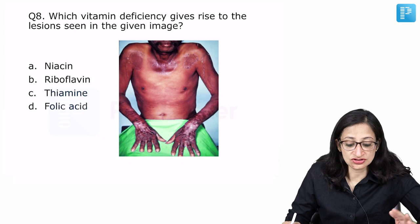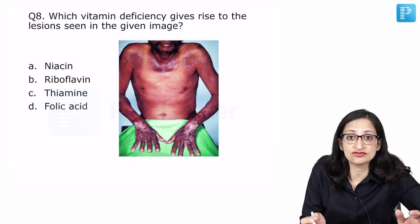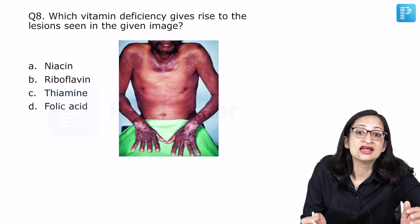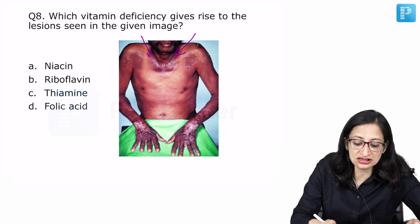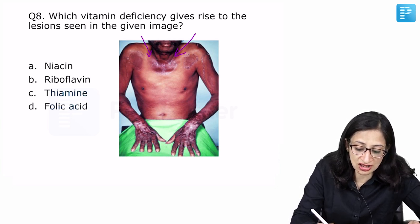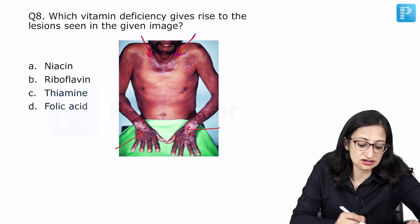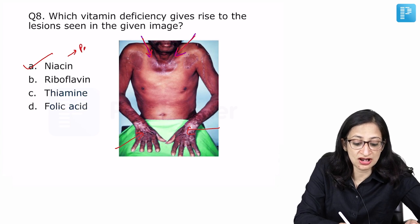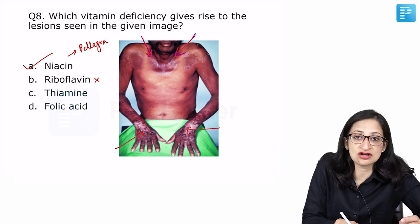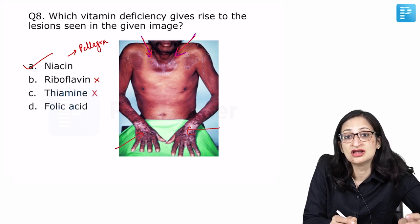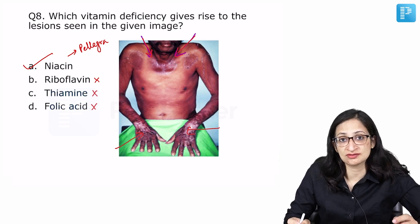Which vitamin deficiency gives rise to the lesions shown in the given image? Though the image shows an adult person, we have dealt with the micronutrients and nutrition is very important from pediatrics perspective. So, we are discussing the questions of nutrition and inborn errors of metabolism which might have some overlap with medicine as well or biochemistry. You can see the Casal's necklace kind of rash here. The rash is there in the sun exposed areas. It is there on the hands, it is there on the neck. That rash is basically due to niacin deficiency which gives rise to pellagra. Pellagra is a disease of some D's where there is diarrhea, dermatitis, dementia and even death can happen. Riboflavin deficiency will cause angular stomatitis, cheilitis and so on. Thiamine deficiency will give rise to beriberi. Folic acid deficiency again will lead to megaloblastic anemia not a picture like this.